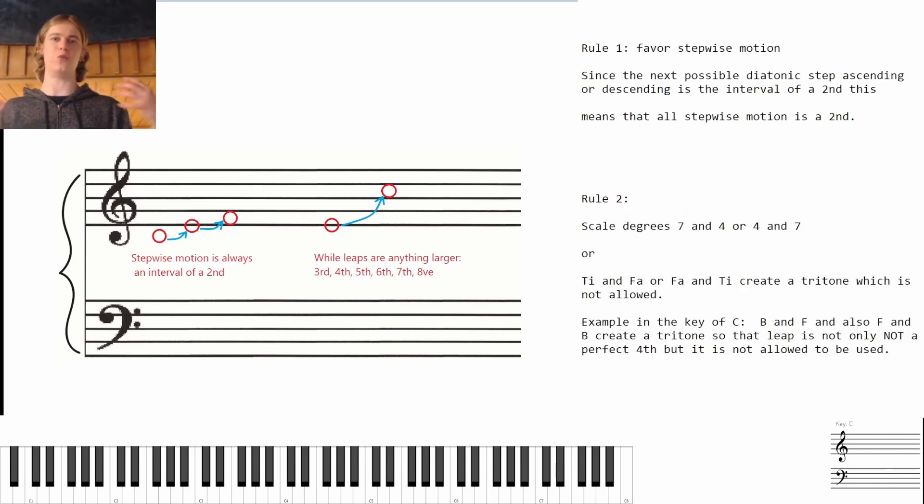Okay, so the very first rule of one-to-one counterpoint is that it favors stepwise motion. So as you can see on the left it's going stepwise motion up that D, E, and that F and that is known as stepwise motion. So the note is just traveling up to the next possible note. Stepwise motion can be up or down but it doesn't skip any notes.